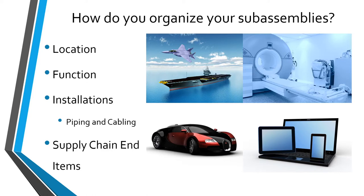Another potential choice is organizing by end items from your supply chain. For example, with a fighter jet, the radar might be created by a different division or obtained from a supplier, so you might have that radar installation organized in its own separate sub-assembly. You're not going to choose just one of these methods — you'll probably use a variety at different levels within your model. The important thing is to give a lot of thought to how you're organizing your sub-assemblies: what makes logical sense and what will facilitate the implementation of changes later on.